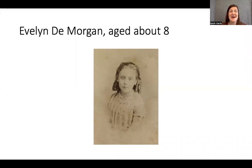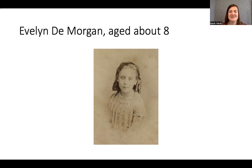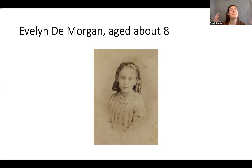For a long time she didn't have a name — she was just a baby girl Pickering until the baptism, when she was baptised Mary Evelyn Pickering. She once commented as a child, 'Of course I know that God exists. He made heaven and earth, but where did he sit when he made them?' She had a real understanding of the universe around her and was grappling with these enormous ideas of heaven and earth.